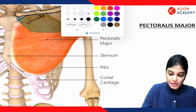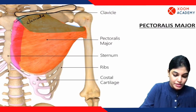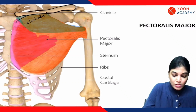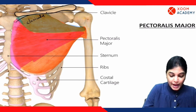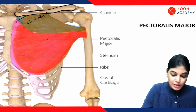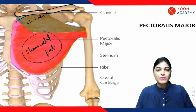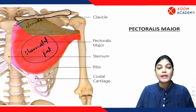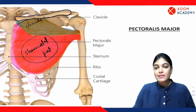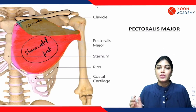The other part is the sternocostal part, which is arising from the anterior aspect of the sternum and also from the ribs at the costochondral junction — specifically from the second to sixth ribs. It also arises from the anterolateral aspect of the sternum, and a few of its fibers also originate from the external oblique muscle aponeurosis. So these are the two heads of pectoralis major: the clavicular head and the sternocostal head.